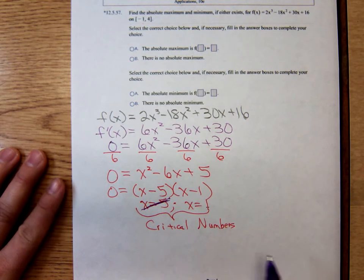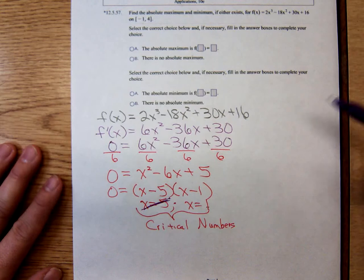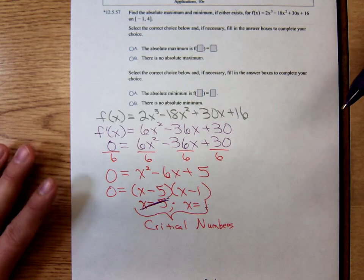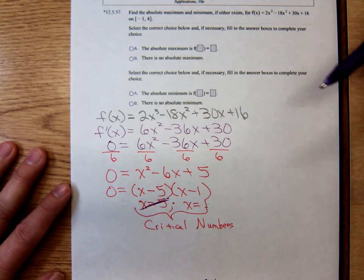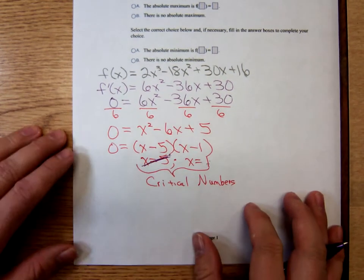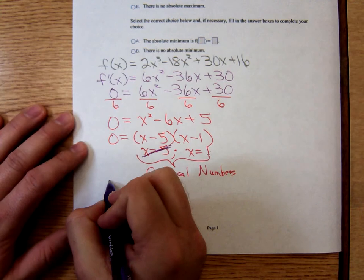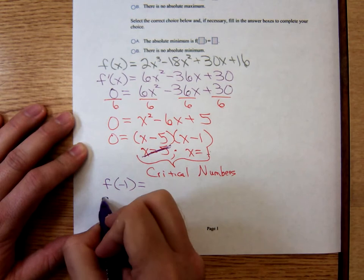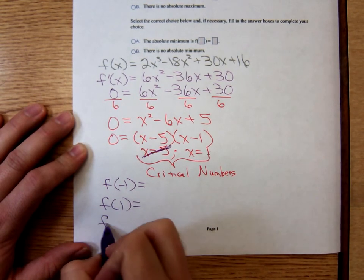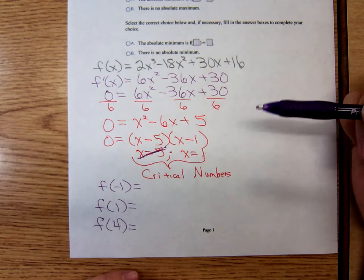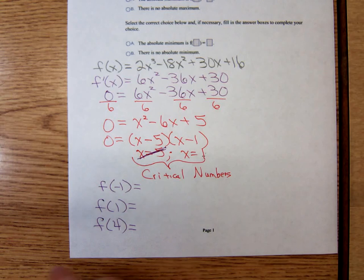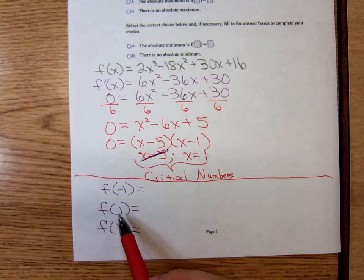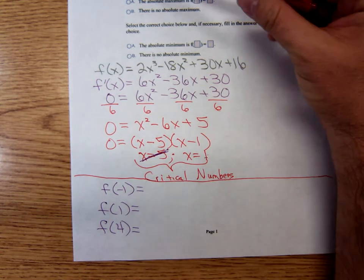For absolute extrema, you don't draw a number line and check. All you need to know is which x value — the critical number or the endpoints of the interval — gives the biggest y value, and which one gives the smallest y value. So we're going to plug in negative 1, positive 1, and 4 into the original function. The endpoints of the interval are negative 1 and 4.